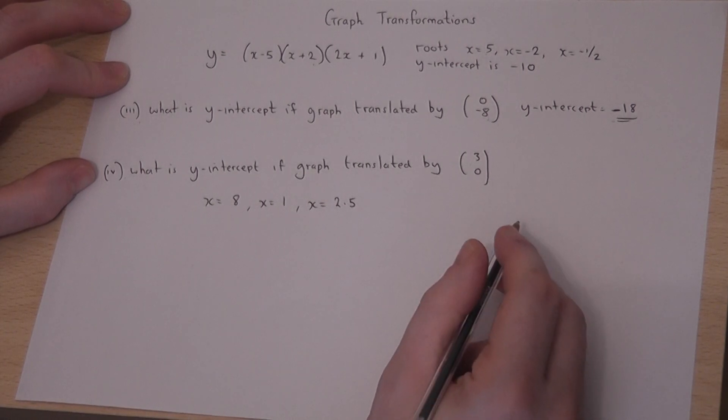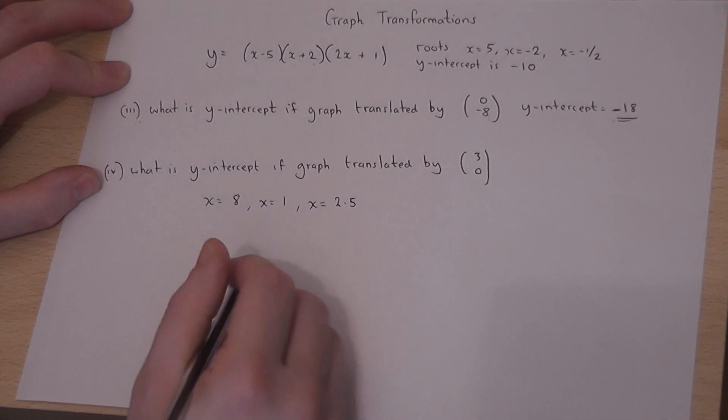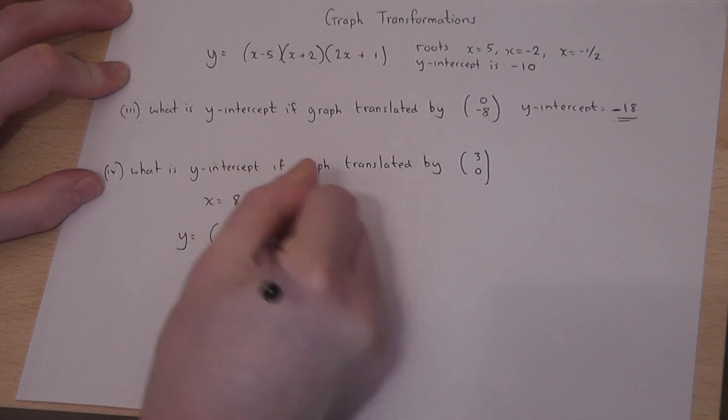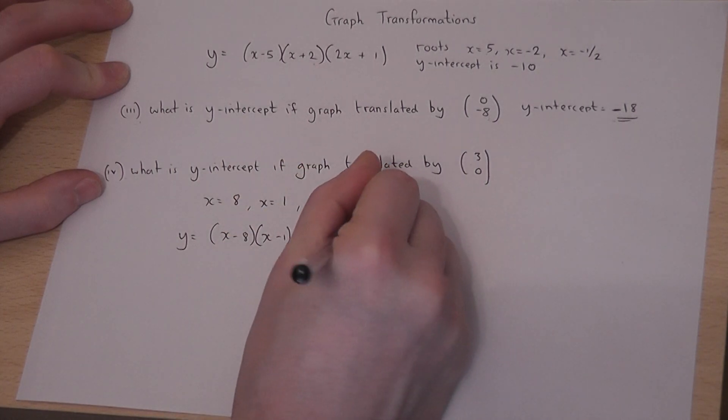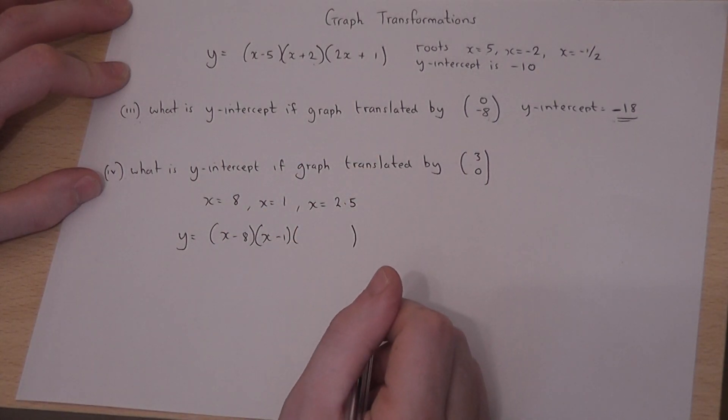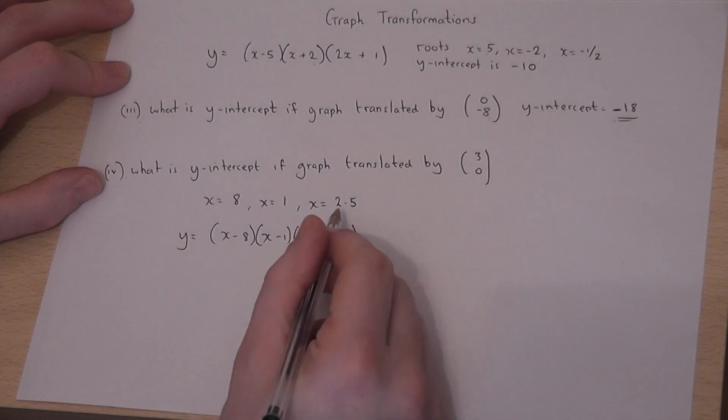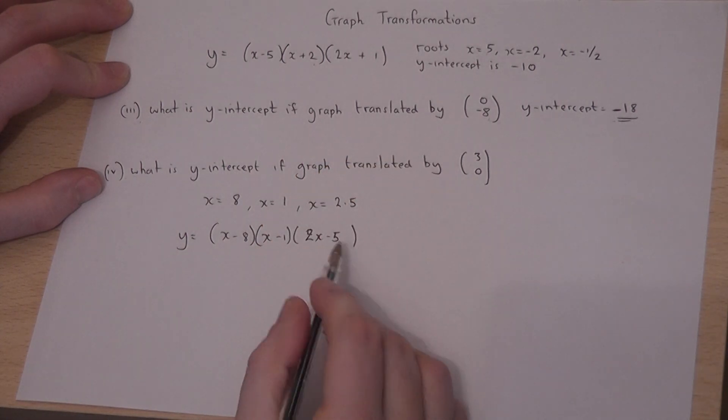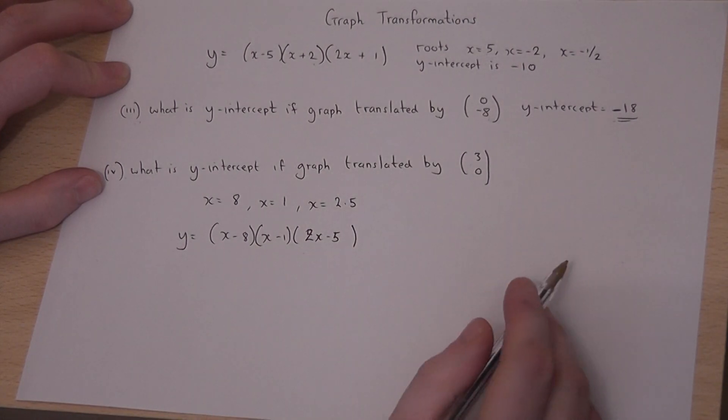Because if they're the roots, the factors must be (x-8)(x-1) and the bracket which gives you 2.5 as a solution must be (2x-5), because 5 divided by 2 is 2.5.